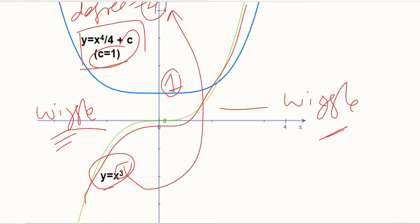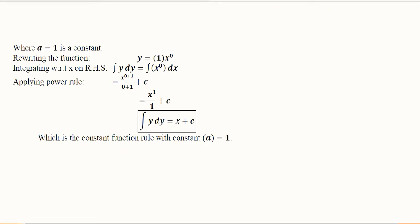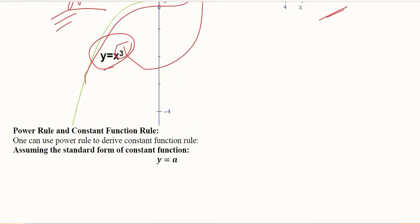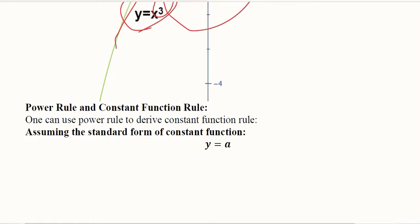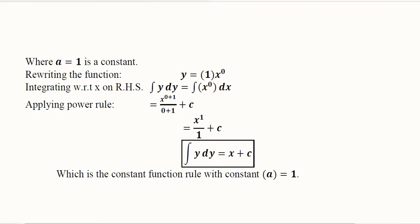The power rule and constant function rule are linked in a way that we have seen before, but now we will actually see it. One can use power rule to derive the constant function rule. Assuming the standard form of the constant function, this is the standard form where the power of the variable is equal to 0. Now let us assume that a is equal to 1. When we do so, it becomes this, and you can see that x raised to the power 0 is still there because it means 1 and in product it doesn't affect the result. Integrating it with respect to x...